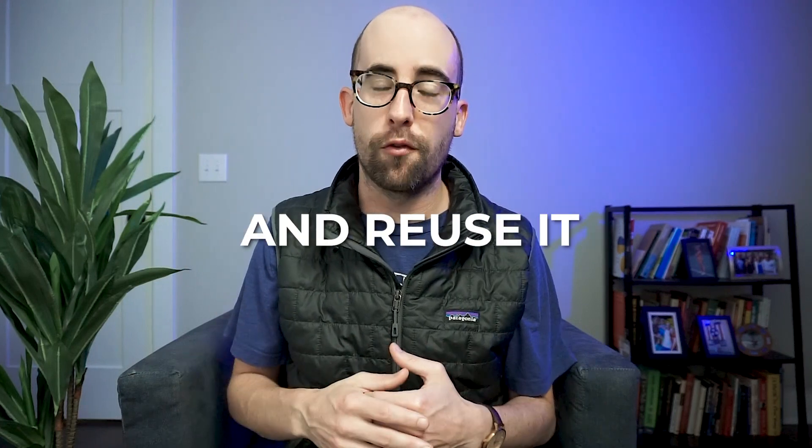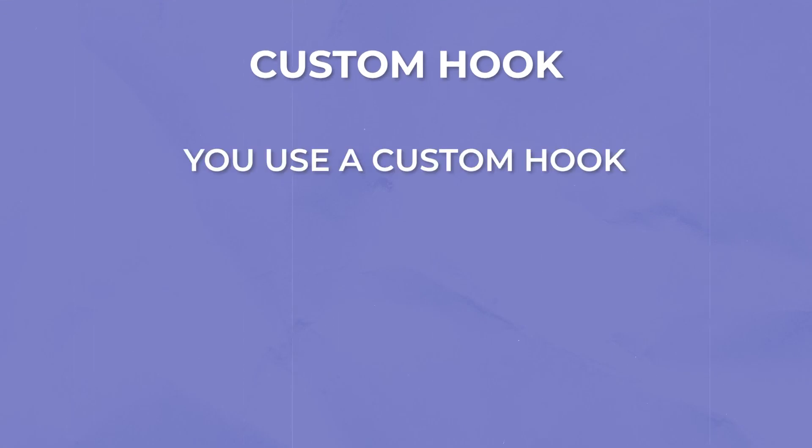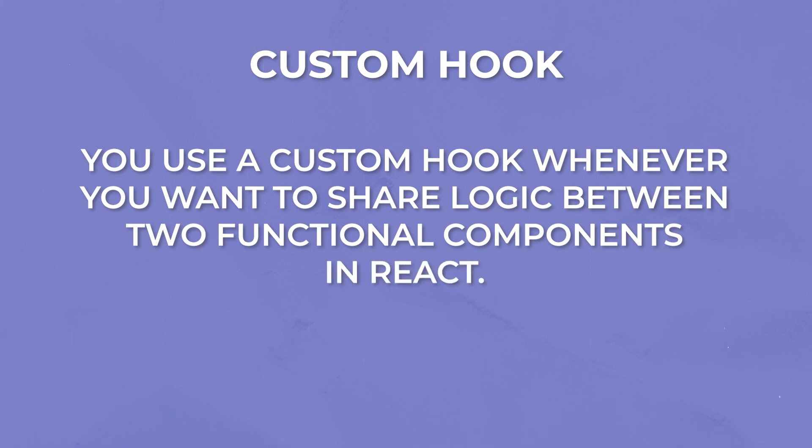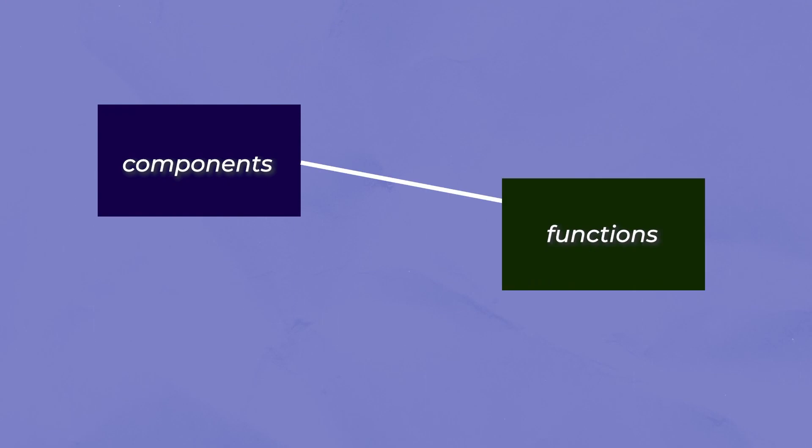The third pattern I would ask about is how to write a custom hook. The point of all these patterns is to share code, reuse it, and make things more clean and modular — custom hooks are no different. You use a custom hook whenever you want to share logic between two functional components in React. Components are functions, hooks are also functions, and so this is just yet another function you're writing to make things more reusable. You can write it wherever you please and return whatever you want.